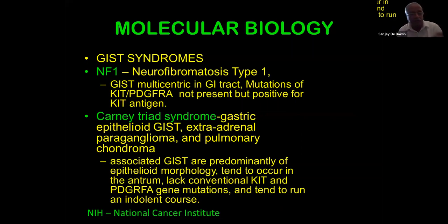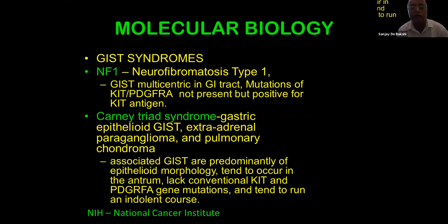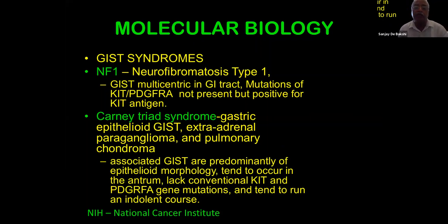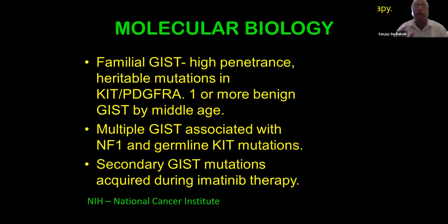GIST syndromes include neurofibromatosis type 1, where multicentric GISTs occur in the GI tract with mutations in both KIT and PDGFRA. The Carney triad syndrome features gastric epithelioid GIST, extra-adrenal paraganglioma, and pulmonary chondroma. Succinate dehydrogenase-deficient GISTs are predominantly epithelioid, tend to occur in the antrum of the stomach, lack conventional KIT and PDGFRA gene mutations, and tend to run a fairly indolent course.